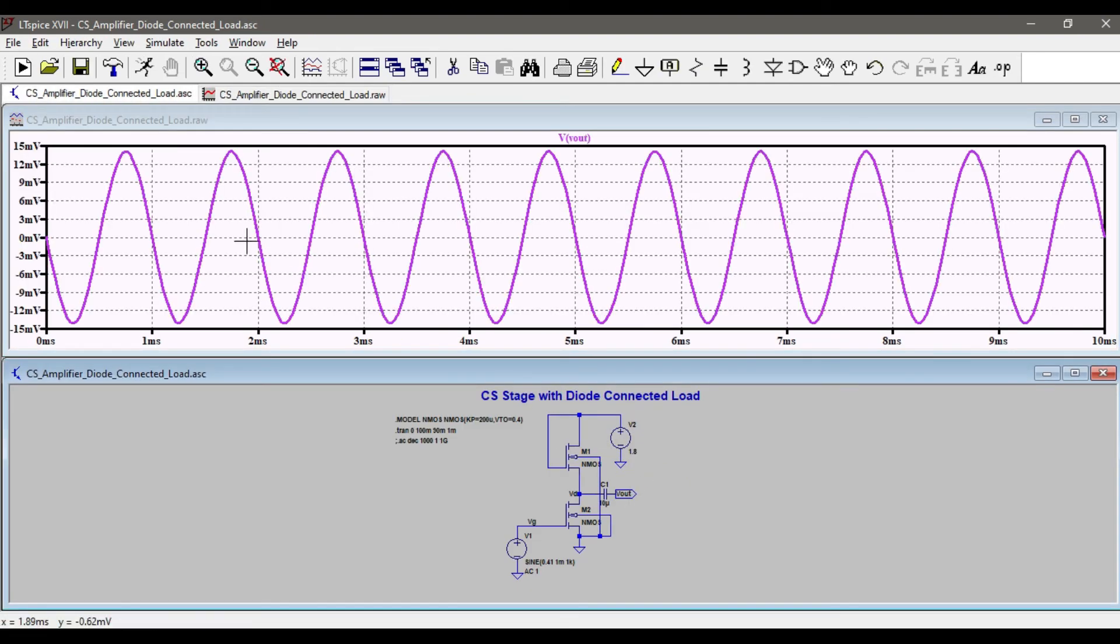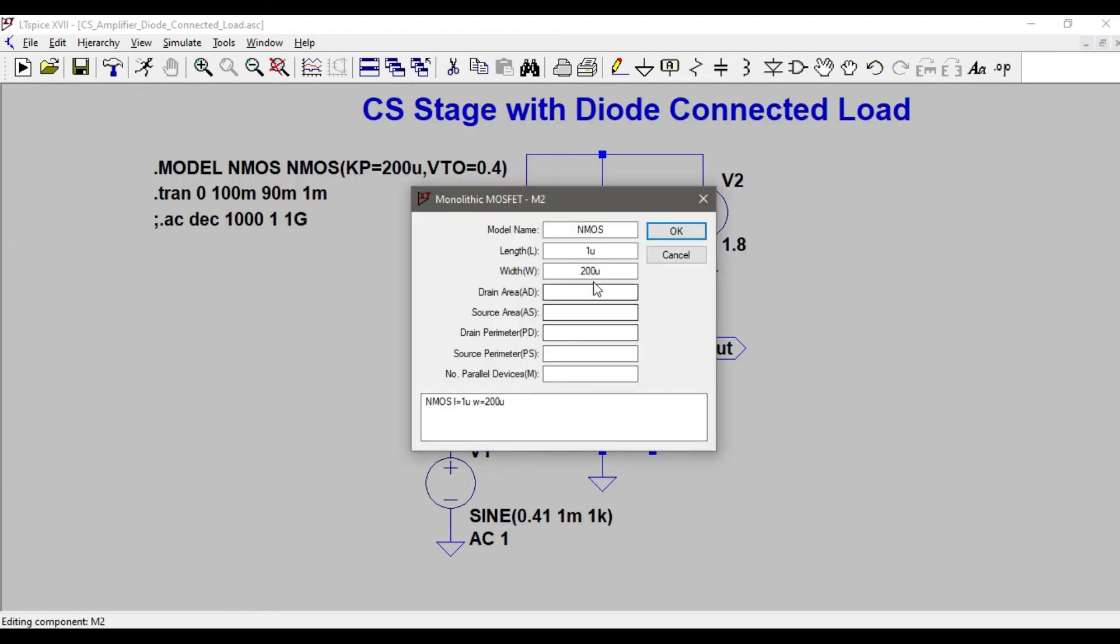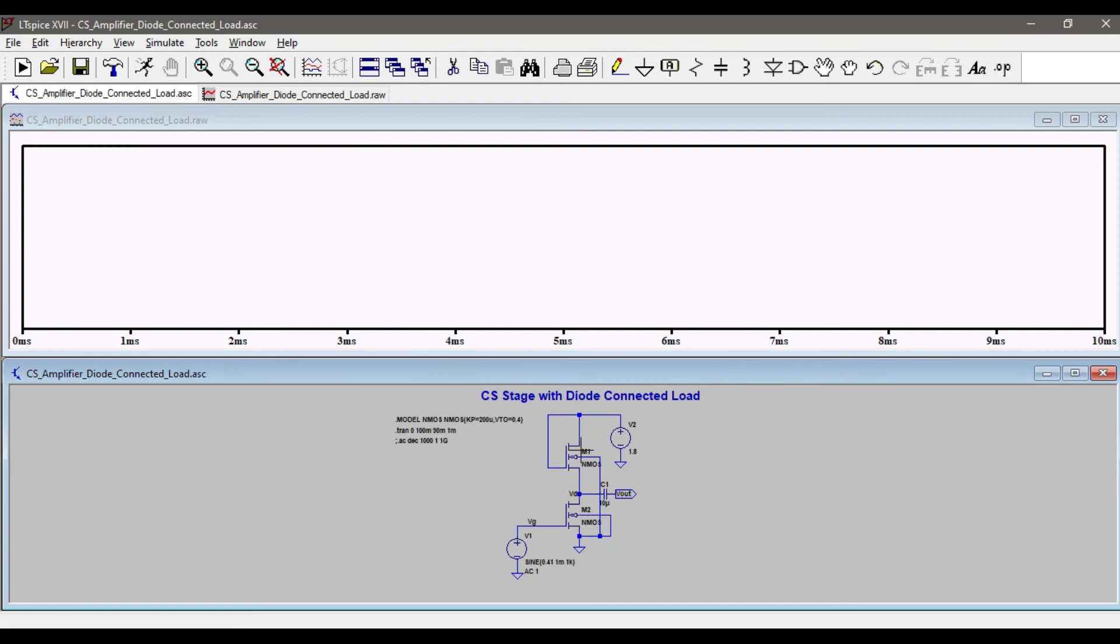And I'll click on the output. I am still getting more gain, so let's increase the W by L ratio of NMOS and see if we get more gain. So I'm gonna increase it to 1 milli and let's run the simulation. It must be more than 30, it is 30.